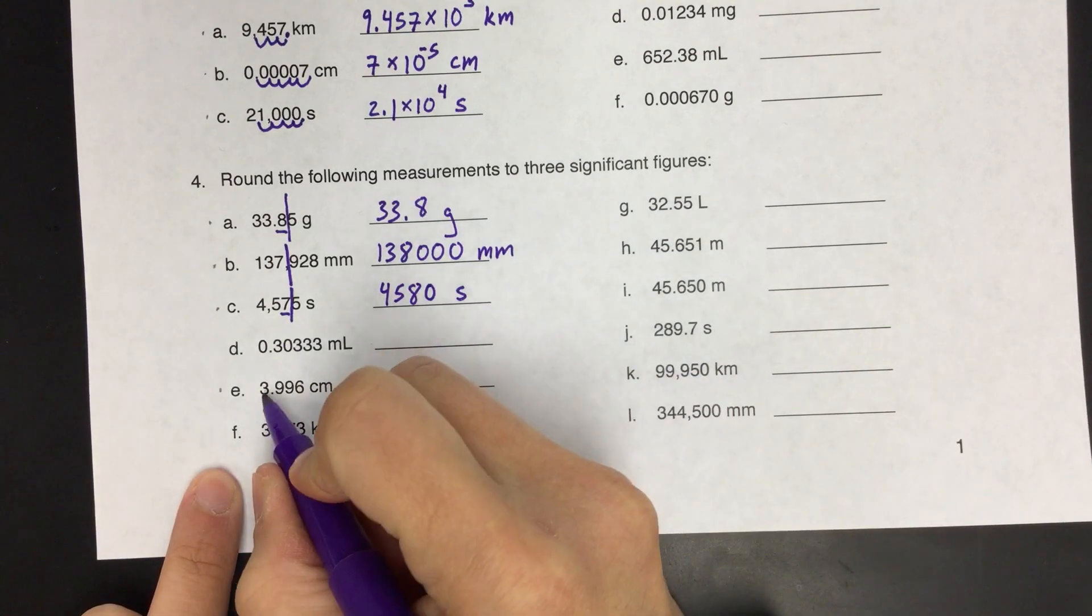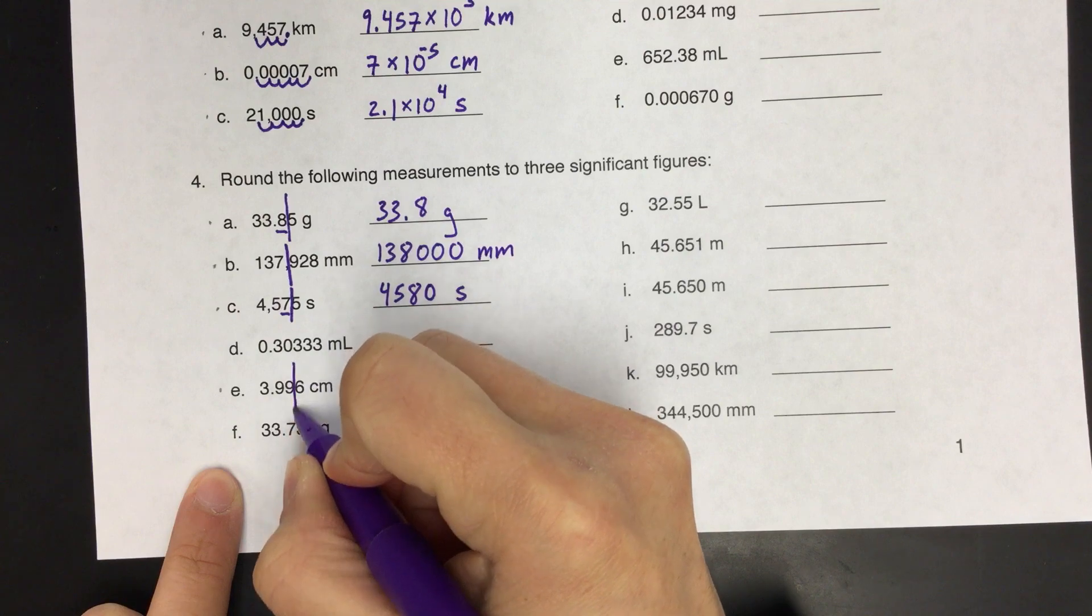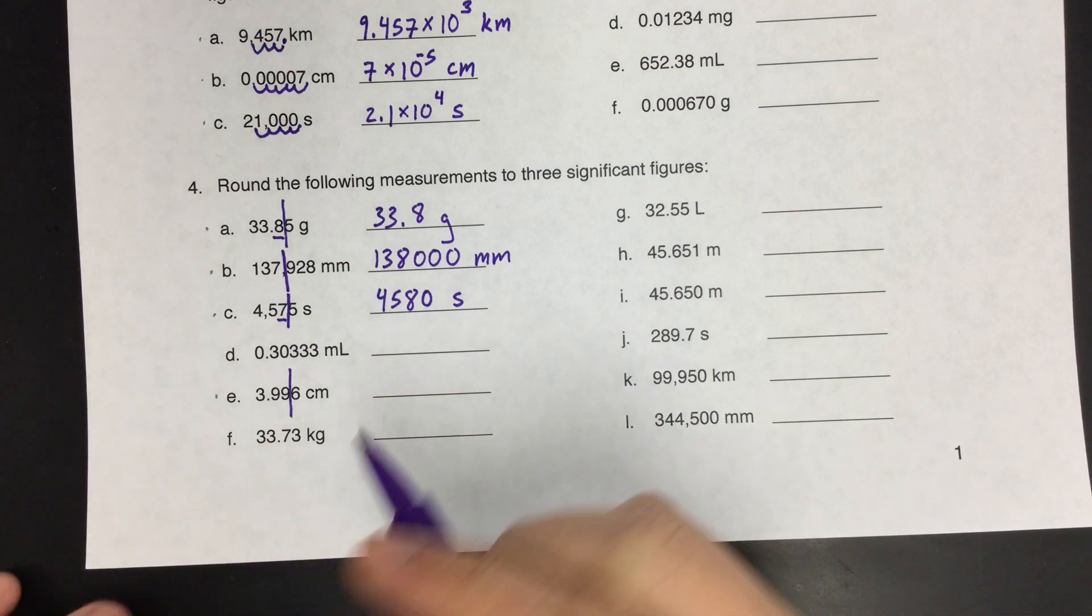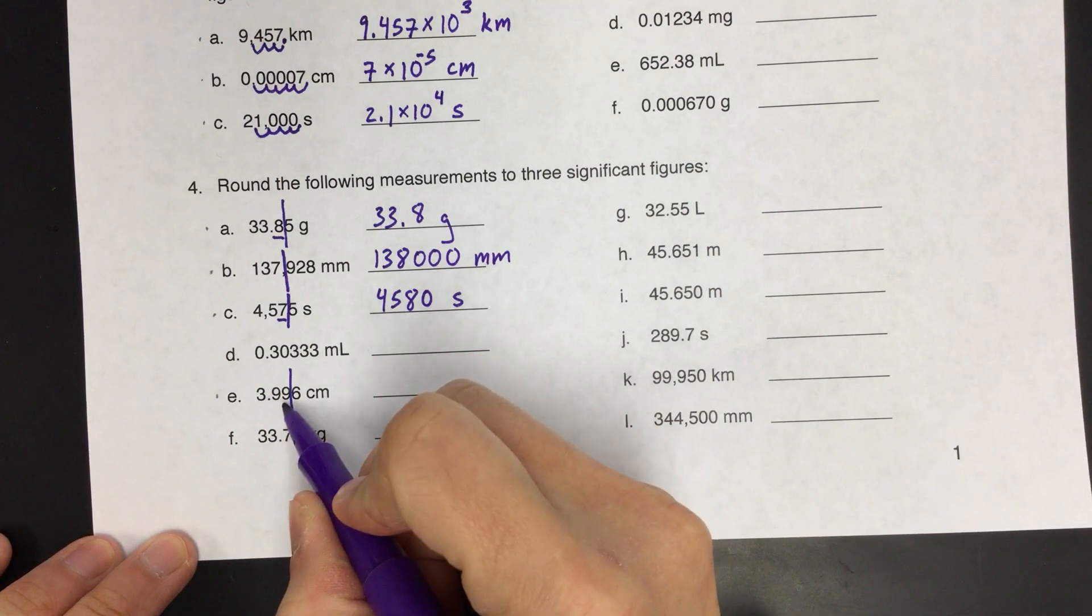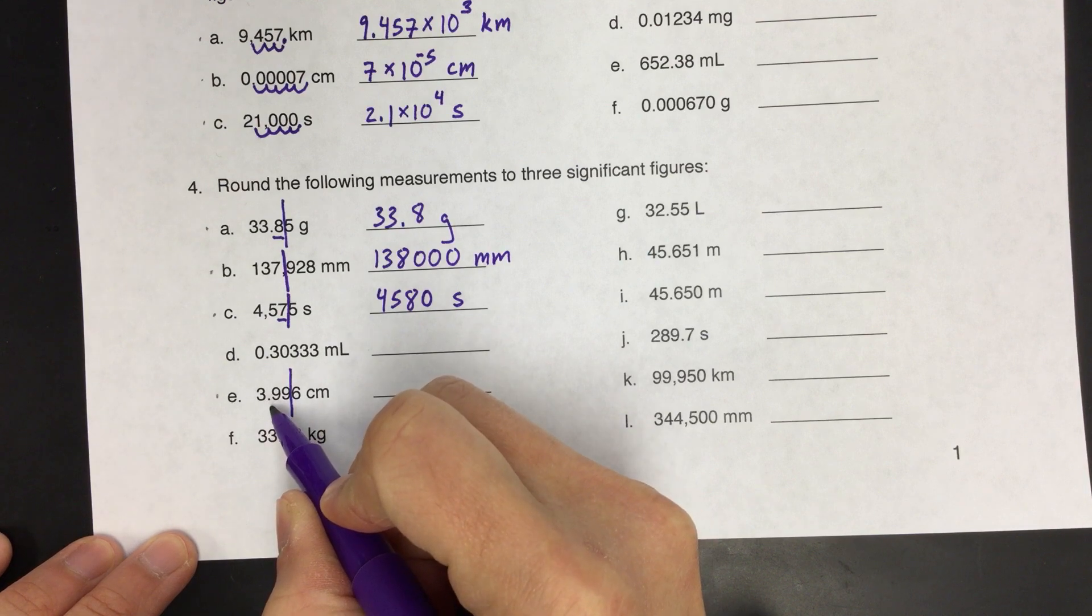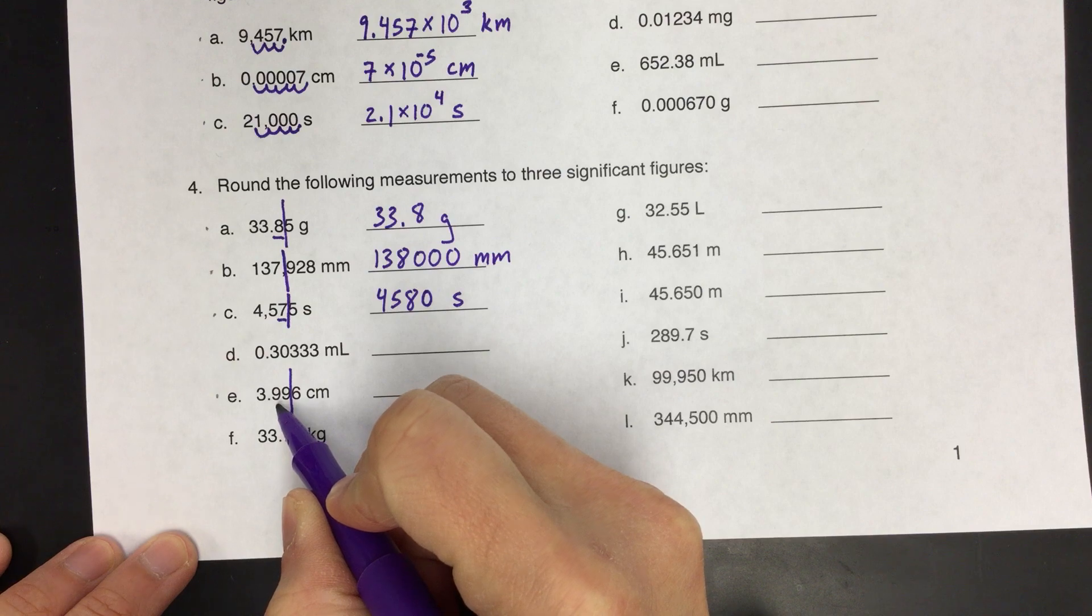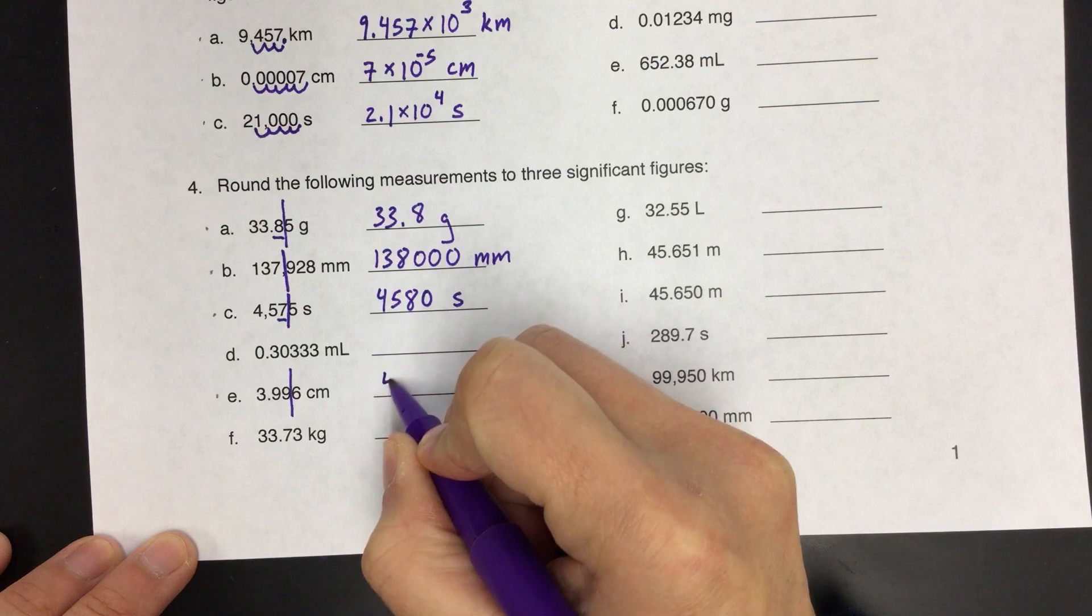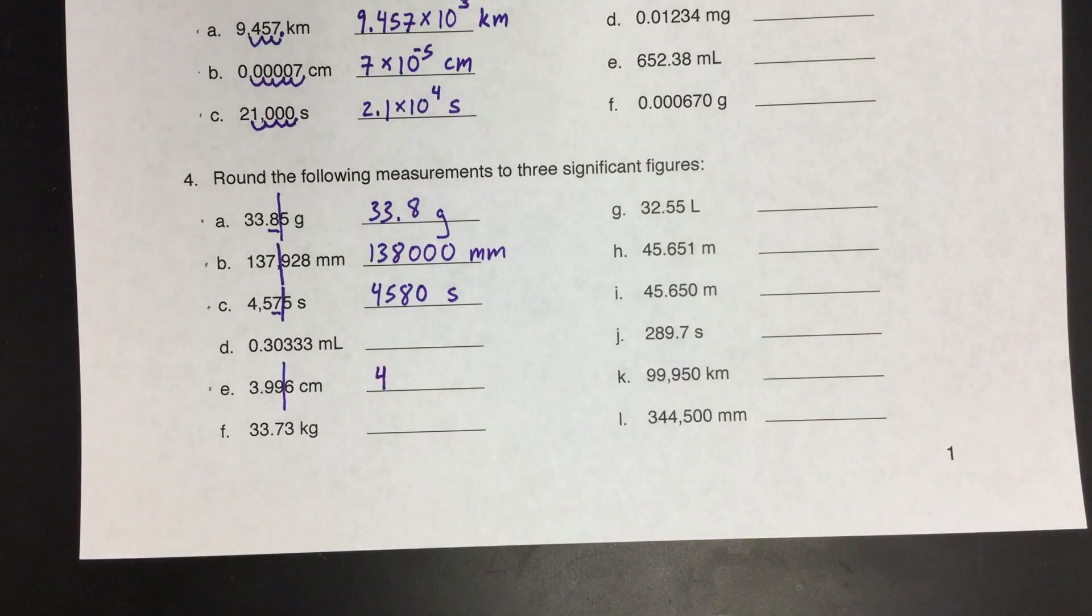E here is kind of tricky. We have 1, 2, 3 cut off there. And we have a 6, which is greater than 5, which means we round up. So if we do that, it's going to change this number to 10, which means this number has to go up, which changes that number to 10, which means this number has to go up to 4, which makes sense. So 3.996 gets rounded up to 4.